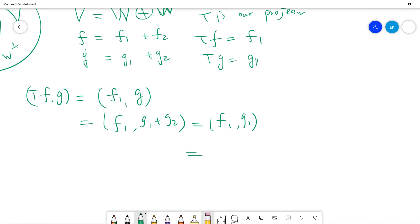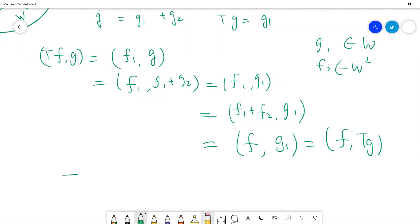Okay, now I think everyone sees the trick. So g₁ is also orthogonal to f₂, right? So that means I can write this as ⟨f₁ + f₂, g₁⟩. Because the reason is g₁ lies in W, and f₂ lies in W complement, so they're also orthogonal. Okay, so what is this? This is ⟨f, g₁⟩. And g₁ is Tg. Okay, so nice. From here, here, and here, we know that T is Hermitian.